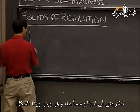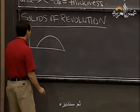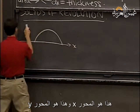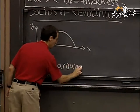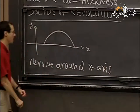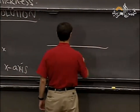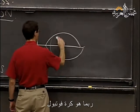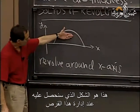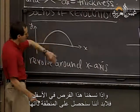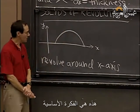The idea here is this: suppose you have some shape, some graph, which maybe looks like this. This is the x-axis and this is the y-axis. In this case I'm going to revolve it around the x-axis. If you do that, the shape that you get is maybe like this — it's maybe a football. So that's the shape you get if you take this piece and revolve it around. We only pay attention to what's above the axis.